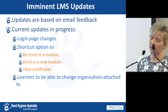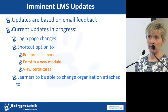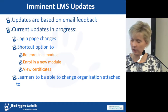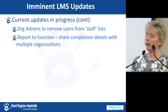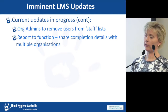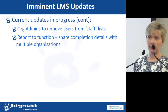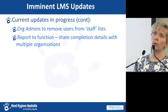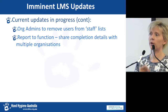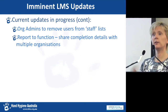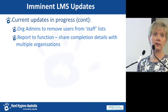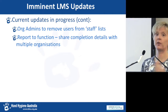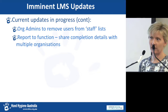We're also looking at giving learners the ability to change their organisation themselves if they haven't been able to find it in the list. Organisation administrators will soon be able to remove users from their staff lists. And we're looking at a report-to function where if you're registered to one organisation but need to send completion details to multiple organisations, you can select boxes to do that without completing the module at every organisation you're attached to.